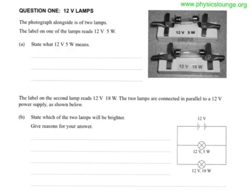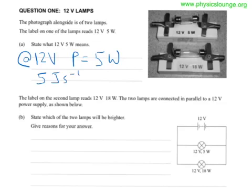State what this means. This means that when it's running at 12 volts or with 12 volts set across the lamp, it will produce a power of 5 watts. So if you were being very specific, you'd say 5 joules per second converted to energy in that.